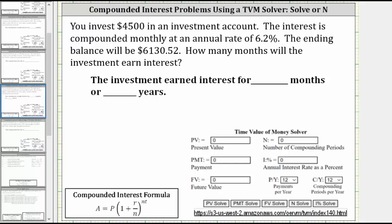You invest $4,500 in an investment account. The interest is compounded monthly at an annual rate of 6.2%. The ending balance will be $6,130.52. How many months will the investment earn interest or how many months will it take to reach the desired balance of $6,130.52?